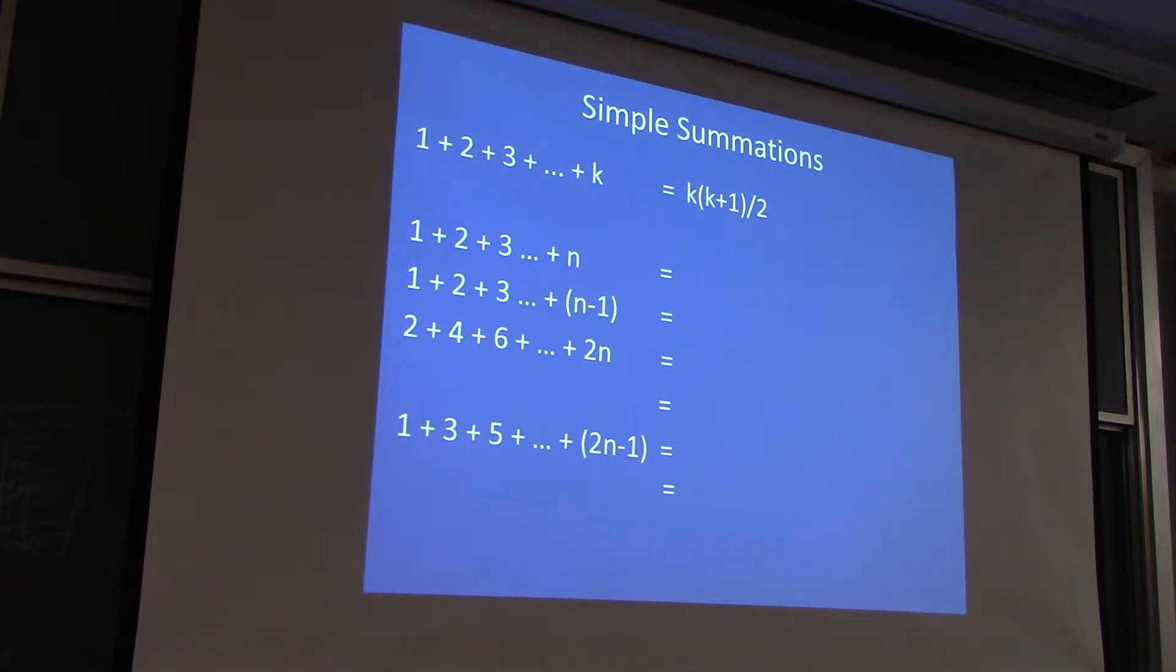So what is the summation of the first n integers? That's an easy one. n times n plus 1 over 2. What about the sum of the first n minus 1 integers? Right, so it's going to be n minus 1, the end of the sequence, times n, which is the next number, divided by 2.